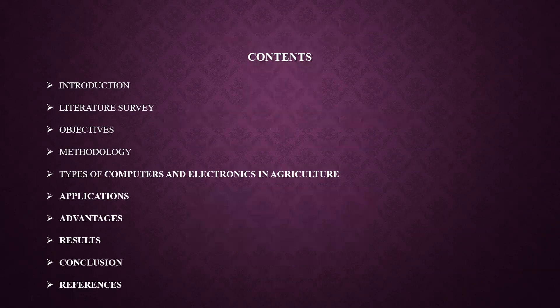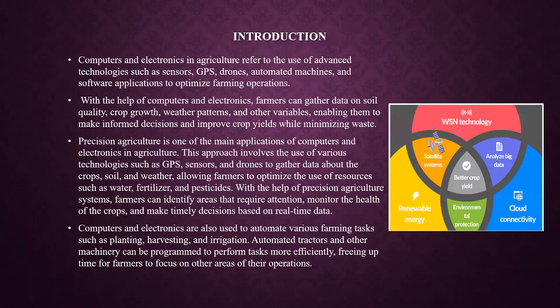These are the contents I am going to share in this presentation. First, I will go with the introduction. We all know how computers and electronics help in the development of agriculture. Computers and electronics in agriculture refers to the use of advanced technologies such as sensors, GPS (Global Positioning System), drones, automated machines and software applications to optimize farming operations.